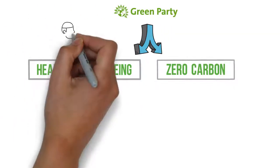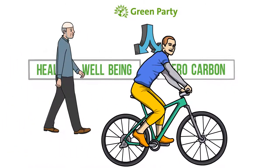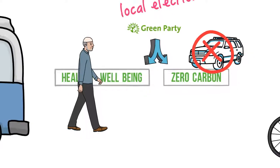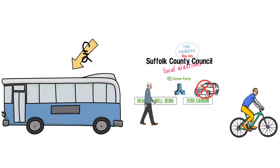A Green Administration would prioritise public transport, walking and cycling, and reduce car dependency. Suffolk has fallen way behind neighbouring counties in planning for and funding sustainable transport.